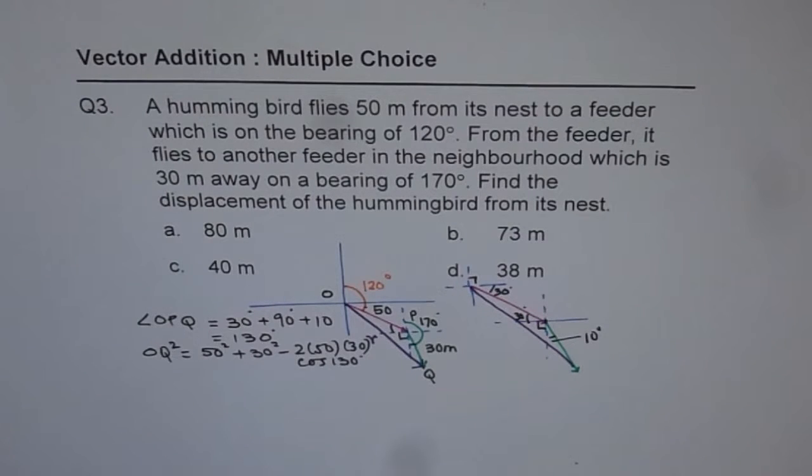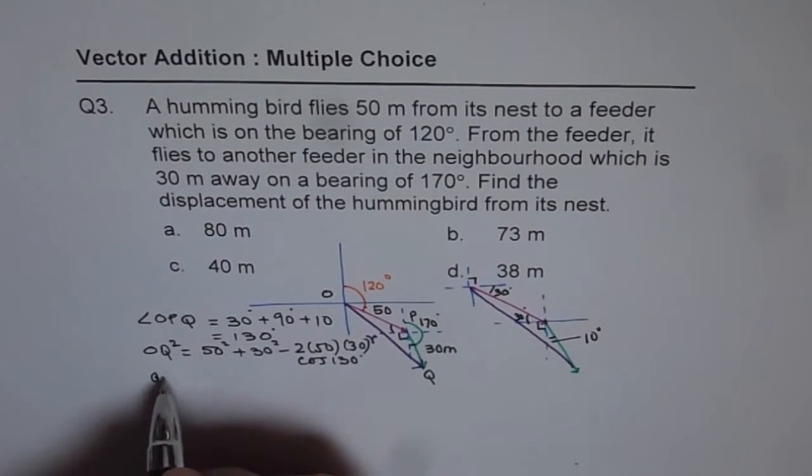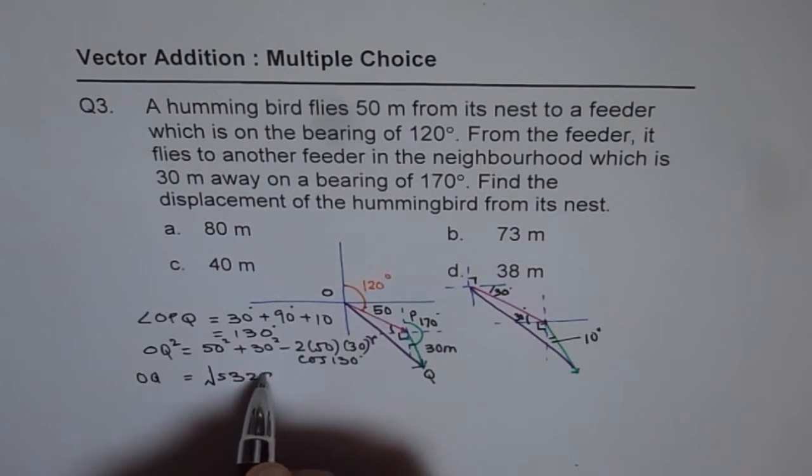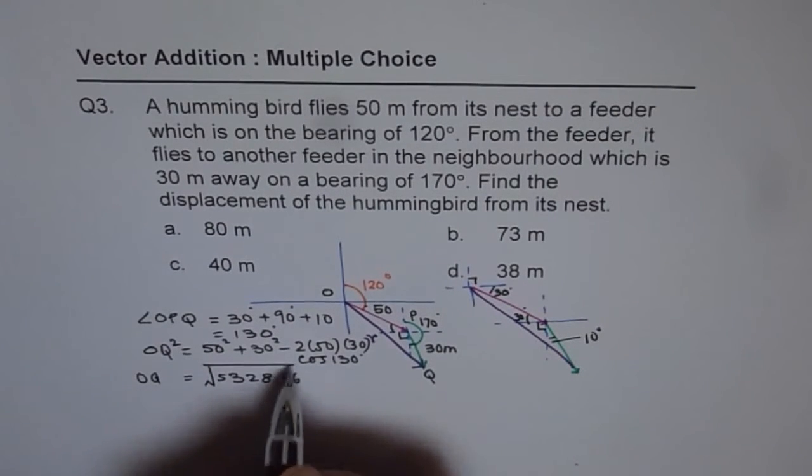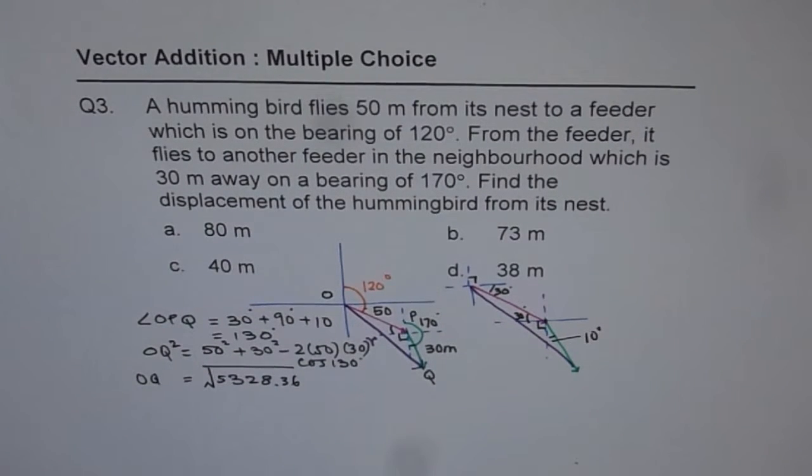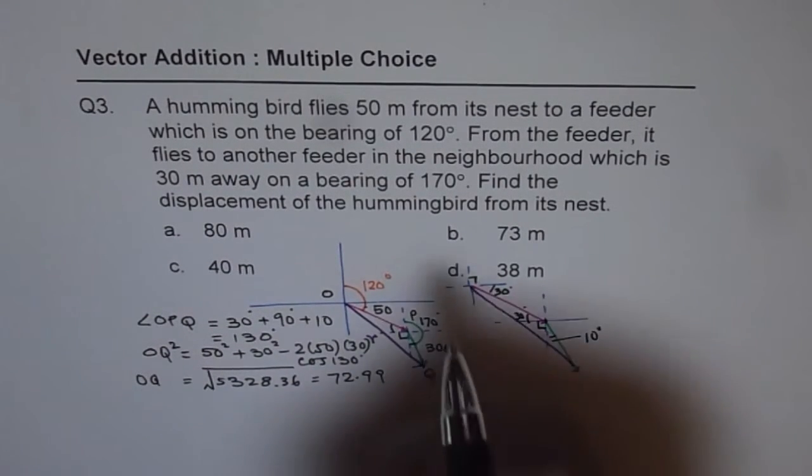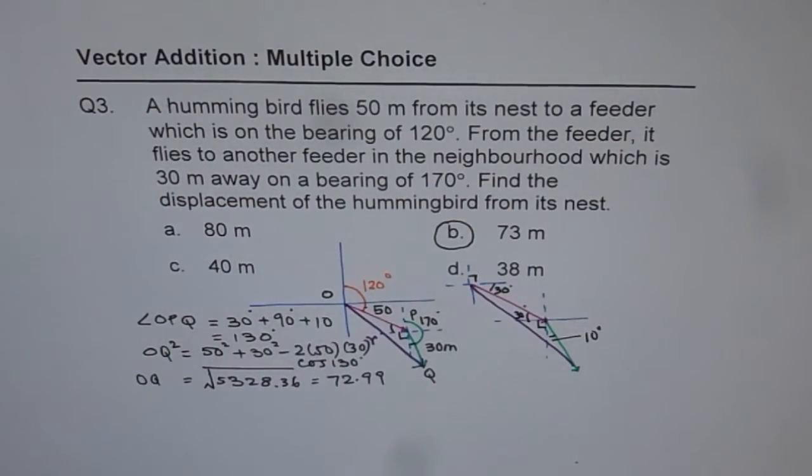50 square plus 30 square minus 2 times 50 times 30 times cos of 130 gives us 5328. We need to do square root of that. So, OQ equals square root of 5328.36 which is equal to 72.99. So, we have option B as our solution, 73 meters.